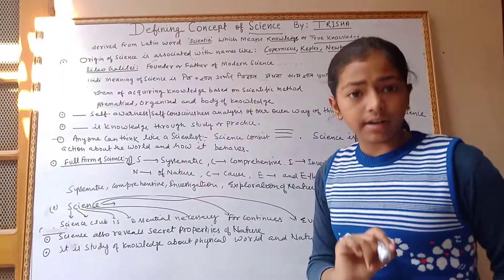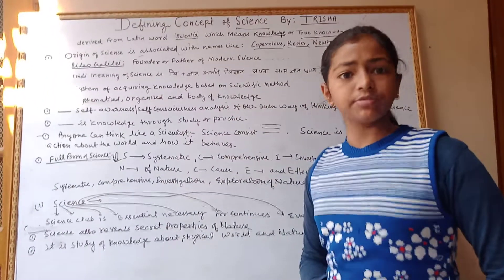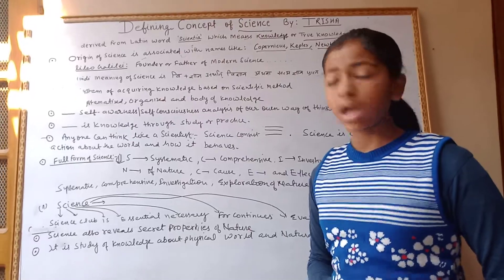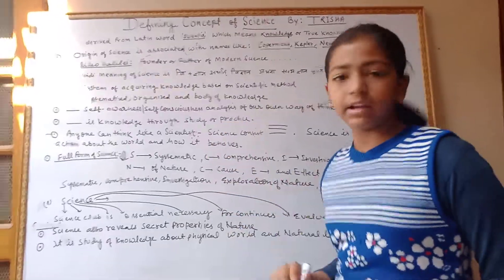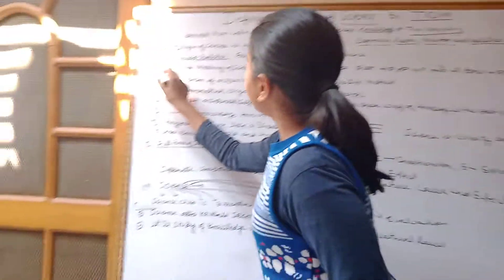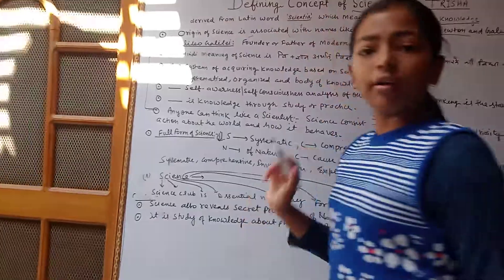Now there are some different ways for explaining science. They are as follows. These are the different ways of explaining science.